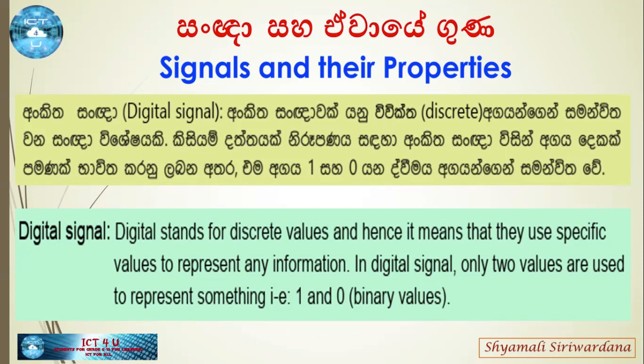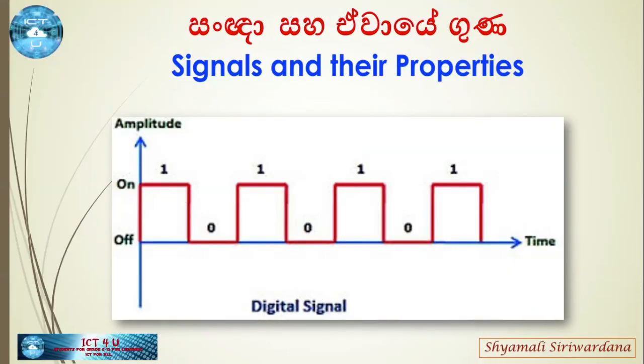Digital stands for discrete values, and hence it means that they use specific values to represent any information. In a digital signal, only two values are used to represent something — one and zero. These are the binary values. Here is an example of a digital signal represented through ones and zeros.